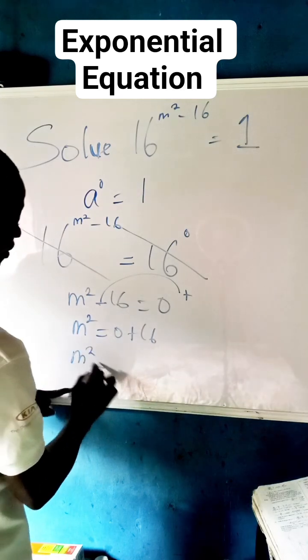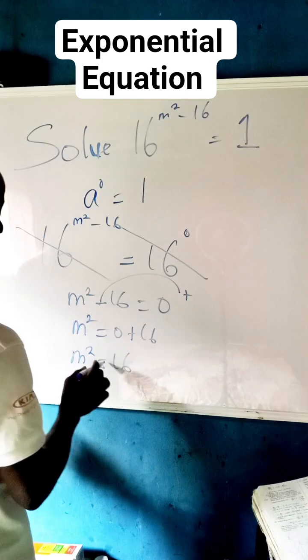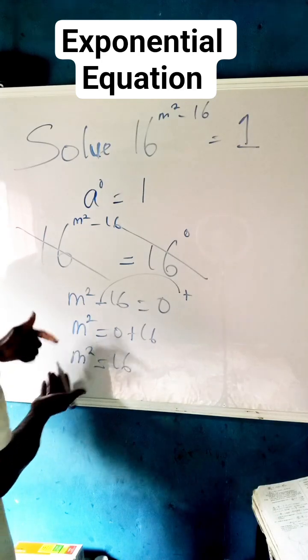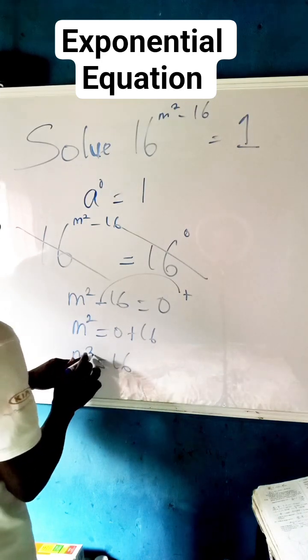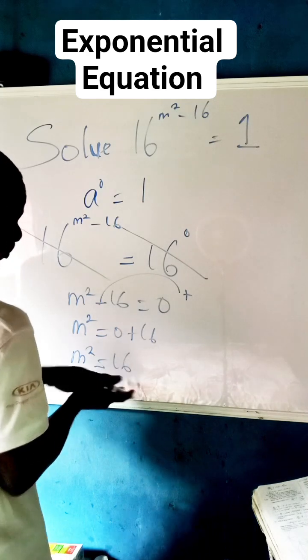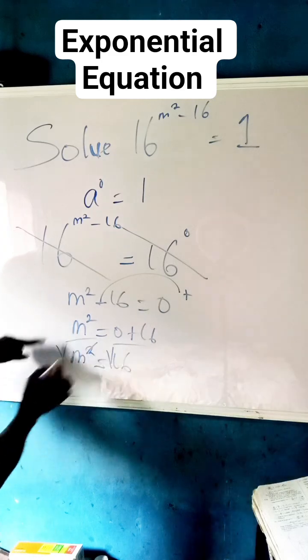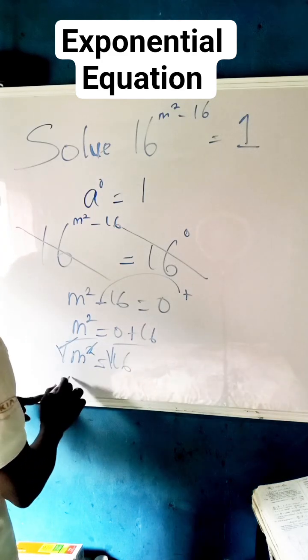Don't forget we are looking for m, not m squared, so we use square roots to cancel out the square. And whatever you do to the first side, you also do to the other side of the equation. Now we square root both sides so that this square cancels out with this square root, so that we now have m is equal to the square root of 16, which becomes plus or minus 4.